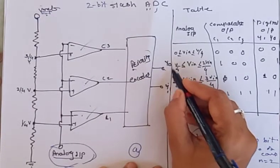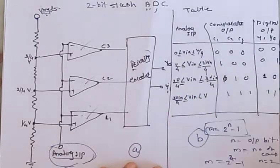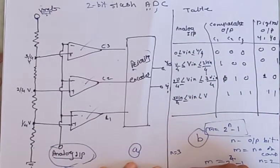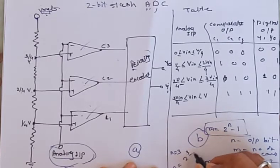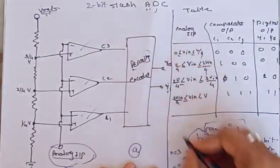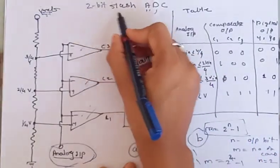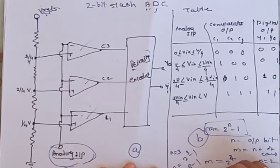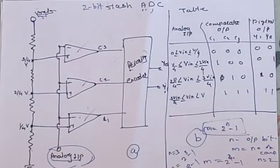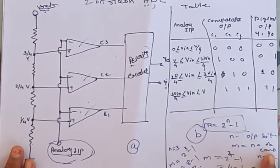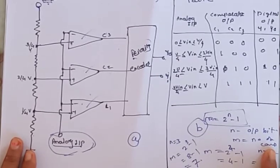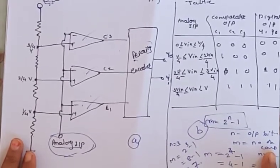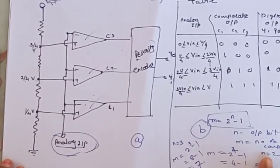For a 3-bit flash ADC, n = 3, so the number of comparators m = 2^3 − 1 = 8 − 1 = 7. In the case of a 3-bit flash ADC, we have to use 7 comparators. This is the logic used to calculate the number of comparators.